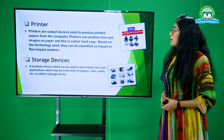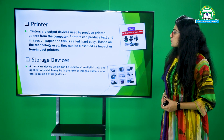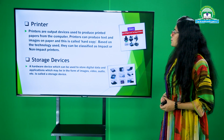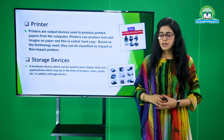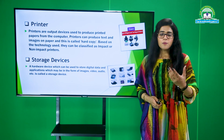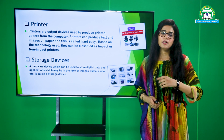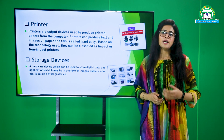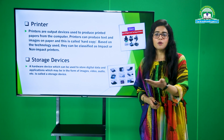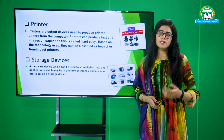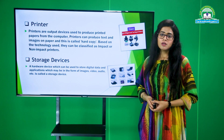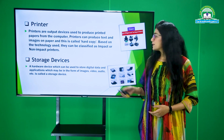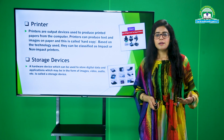Next, humare paas peripheral device mein aati hai printer. Printers are output devices used to produce printed papers from the computer. Printers can produce text and images on paper. This is also called a hard copy. Kuch log soft copy mein padhna pasand nahi karte, toh unhe hard copy ki zaroorat hoti hai — printer se soft copy se hard copy print nikal sakte hain. Based on the technology used, they can be classified as impact or non-impact printers.